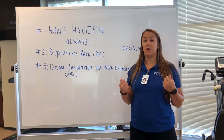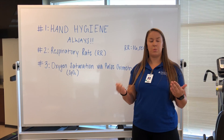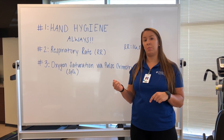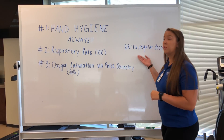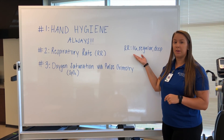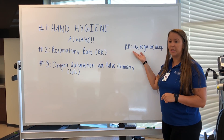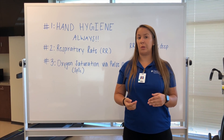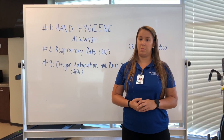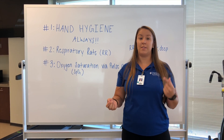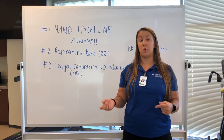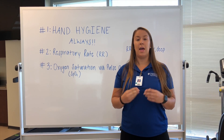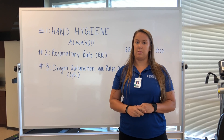Now we're going to go over how to interpret the respiratory rate. A normal breathing pattern is called eupnea, which is anywhere from 12 to 20 breaths per minute — Courtney falls into eupnea at 16 breaths per minute. There's also bradypnea, which is slow irregular breathing at less than 10 breaths per minute. On the other hand, tachypnea is greater than 24 breaths per minute. And apnea is the absence of breathing.